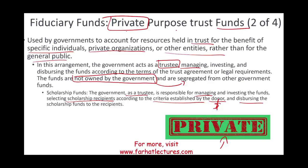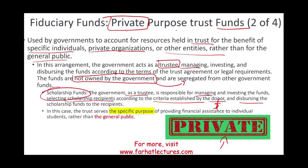Another example: you could create a fund to maintain cemeteries for specific individuals — for example, all people with your last name. That's a special private purpose trust fund. How do you know it qualifies? The purpose is for a specific, identified group — not the general public. You are specifying who you want to benefit from this money. Again, you would use accrual accounting for this fund.